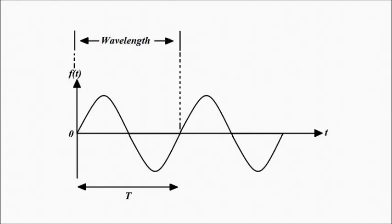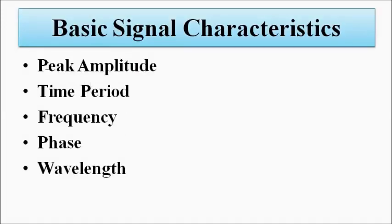We have discussed the basic signal parameters and characteristics: peak amplitude, time period, frequency, phase, and wavelength. All of these will come into play when we discuss modulation techniques used in data communication — amplitude, frequency, and phase modulation — and various multiplexing techniques such as frequency division multiplexing (FDM), time division multiplexing (TDM), and wavelength division multiplexing (WDM). A good understanding of these fundamentals will help us grasp those topics better. I hope you liked this video; please subscribe to Engineering Tutorial for more videos on electrical, electronics, instrumentation, and communication engineering.